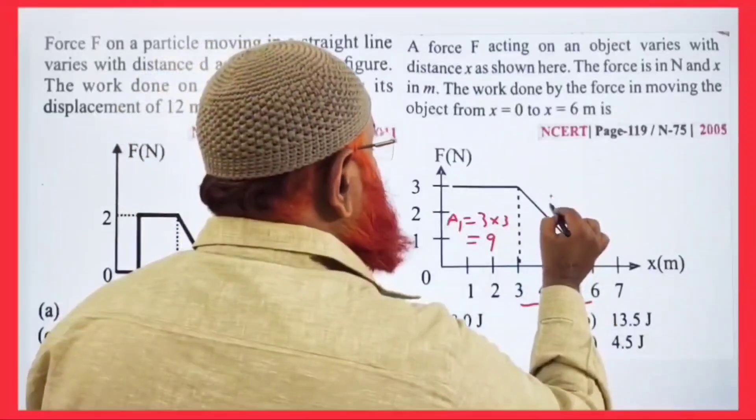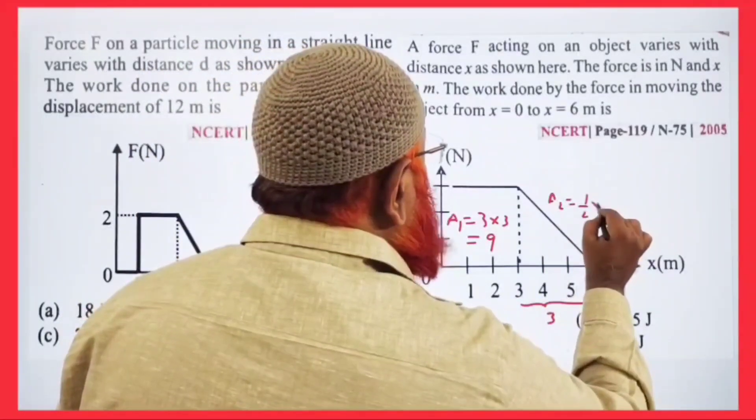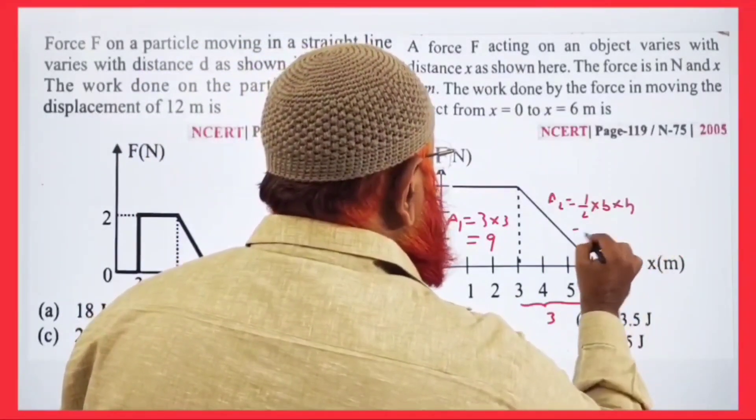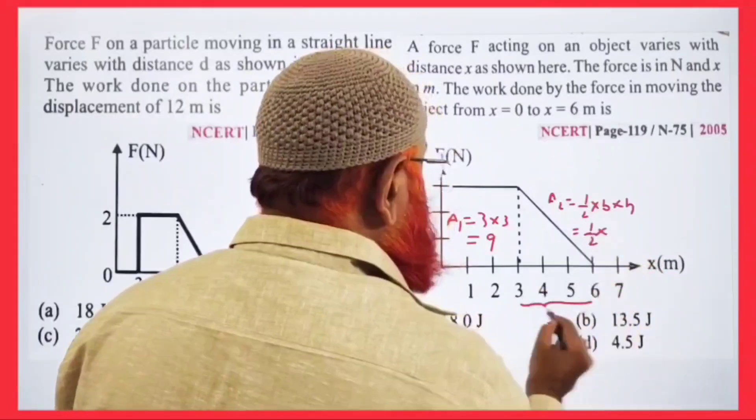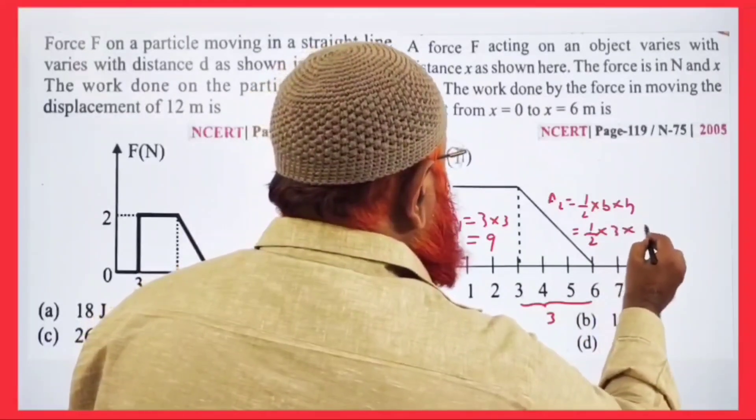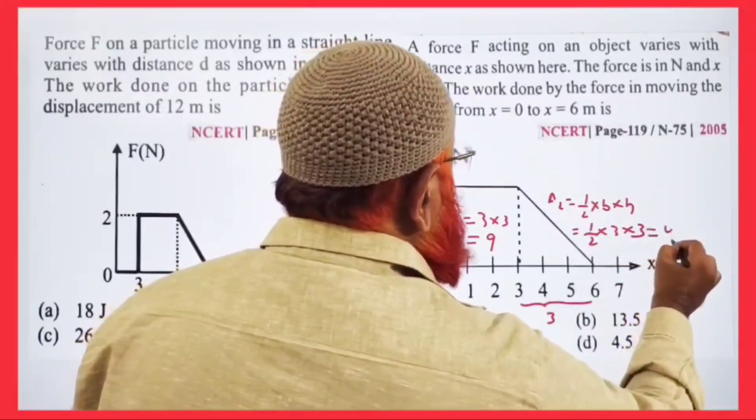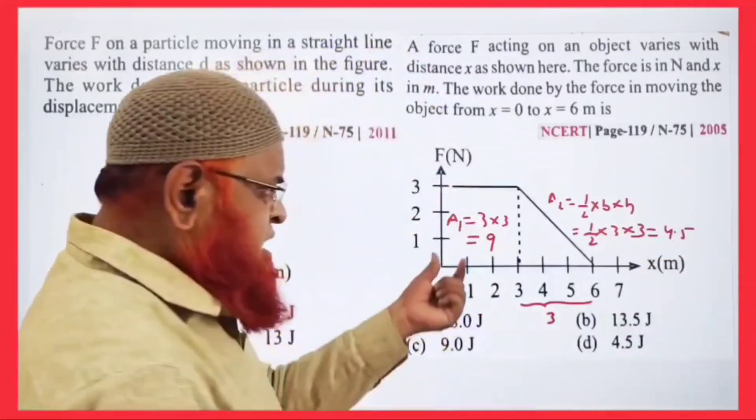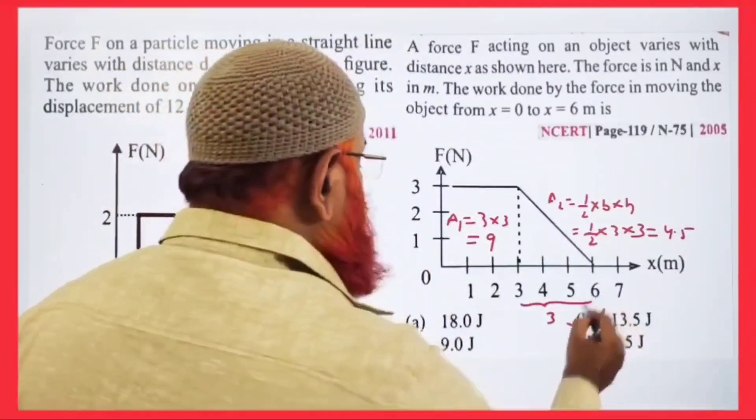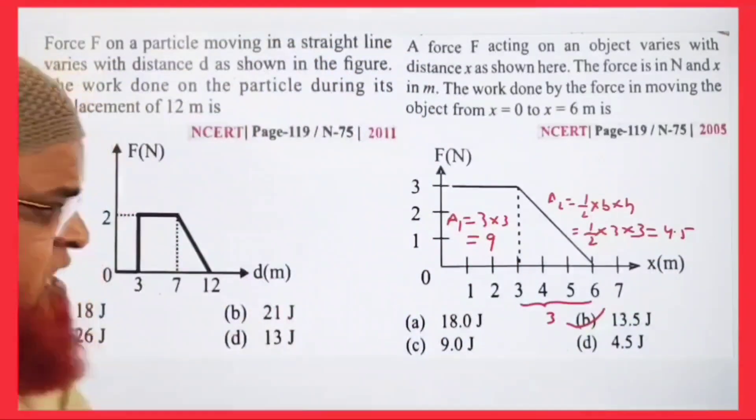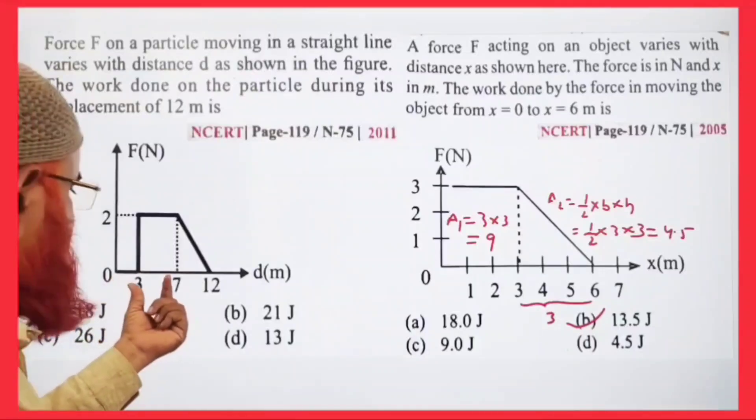The remaining part is a triangle, area A₂ = (1/2) × base × height = (1/2) × 3 × 3 = 4.5. So 9 + 4.5 gives you 13.5 joules. The same method we use here also.